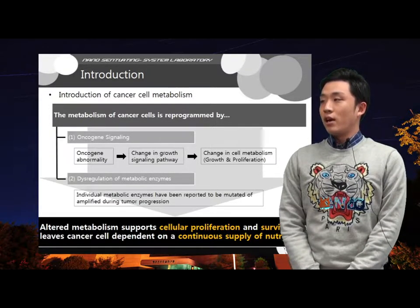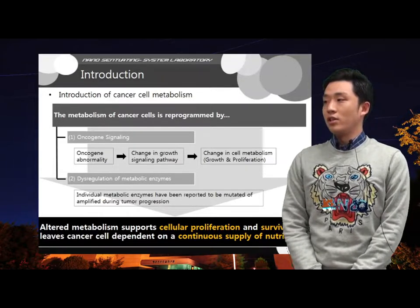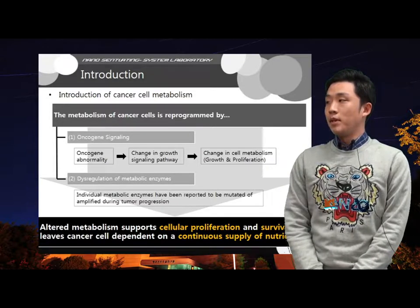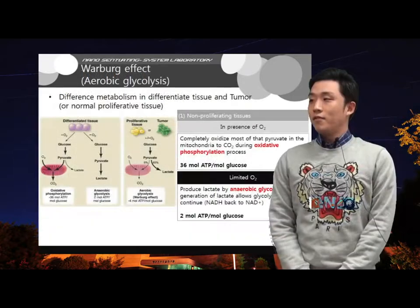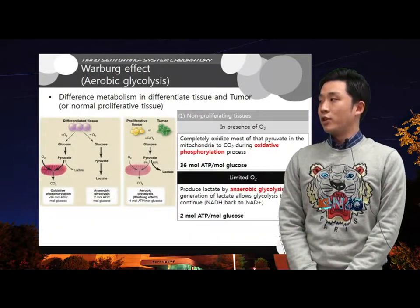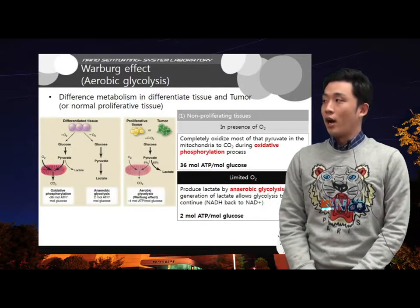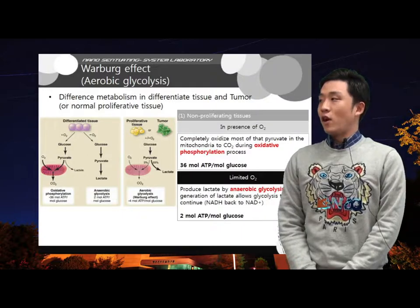The resulting altered metabolism supports cellular proliferation and survival but leaves cancer cells dependent on a continuous supply of nutrients. Therefore, sufficient nutrients need to be supplied for proliferating tumors. Differences in metabolism for differentiated and proliferative tissues, e.g. tumor, are well illustrated in the left figure.